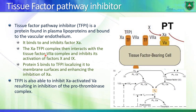Another inhibitor is tissue factor pathway inhibitor. It can bind to factor 10 and then interact with the complex of tissue factor and factor 7, inhibiting the whole thing and preventing activation of factors 10 and 9. This protein can also prevent the prothrombinase complex - by interacting with factor 10, it can also inhibit the activation of prothrombin to thrombin.